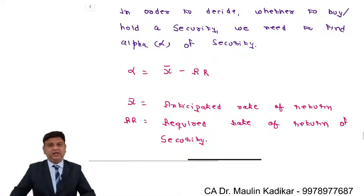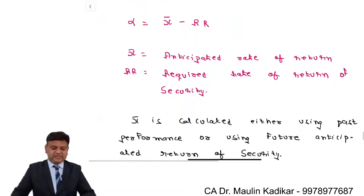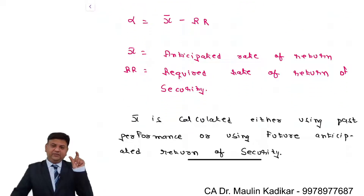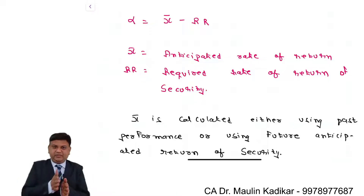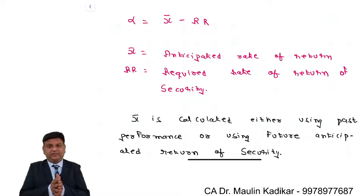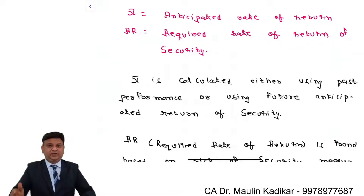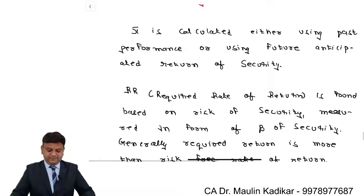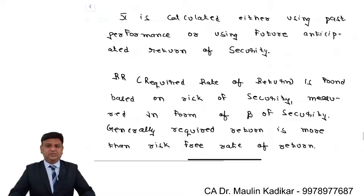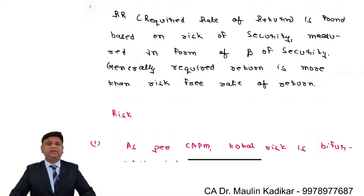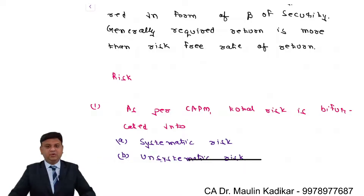Decision making based on CAPM: in order to decide whether to buy or hold a security, we find the alpha of the security. Alpha equals X-bar minus the required rate of return (RJ), where RJ is RF plus beta into (RM minus RF). X-bar is the anticipated rate of return — calculated using past performance or future anticipated return — and RJ is the required rate of return found based on beta. Generally, the required rate of return is more than the risk-free rate.